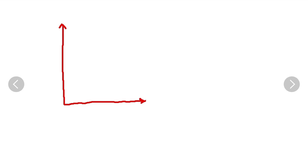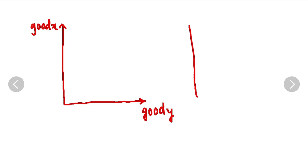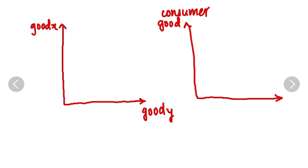Now let's see how a PPC curve looks like. Here is a PPC curve. On the axes, you can either write good X and good Y, or you could also write consumer good and capital good. These are the two things you can write on the axis.